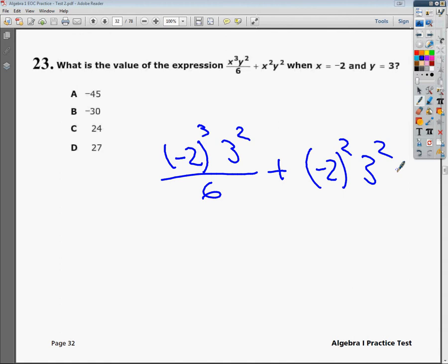So negative 2 to the third power is negative 8 times 3 squared would be 9, and divide that by 6. Plus, the issue here is you need to type in negative 2 into the calculator in parentheses, close it, and then raise it to the second power to make sure you get your 4 times 3 to the second power, which we already discovered earlier is 9.